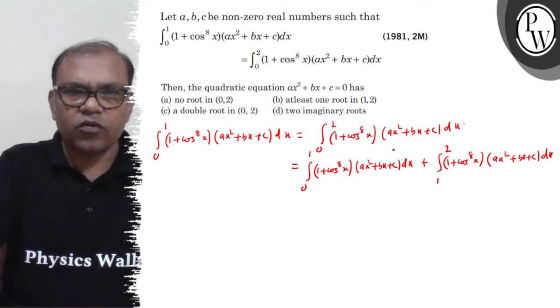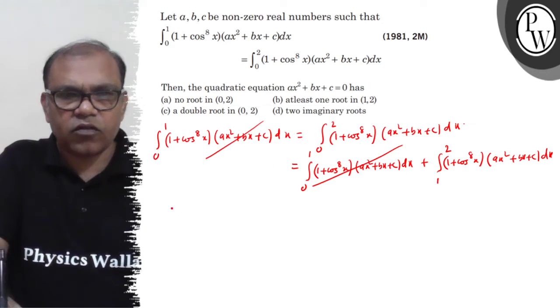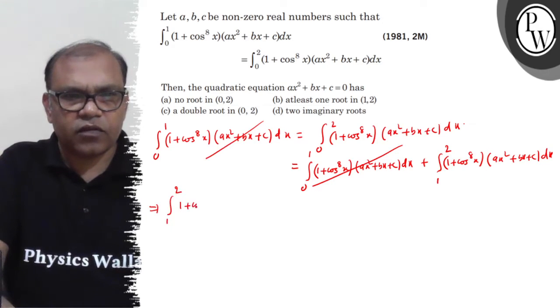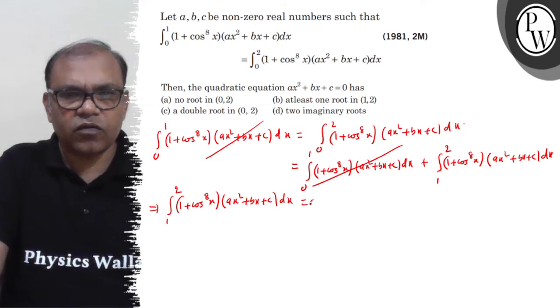Now look, this upper term will cancel with the LHS. This implies integration 1 to 2, (1 + cos⁸x)(ax² + bx + c)dx equals 0. Take this first.